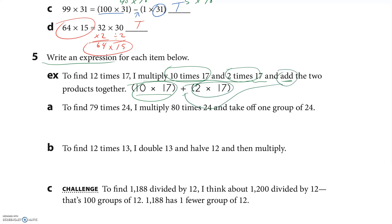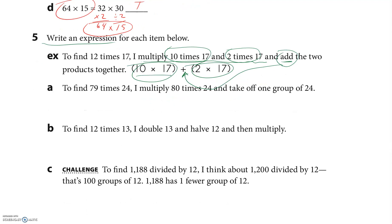Let's try this: find 79 times 24. I multiply 80 times 24, then I take off one group of 24. I believe you write this, it could be others, but if I multiply 80 times 24, there it is. Take off means subtract one group 24. I don't have to put this in parentheses, but I'm going to just kind of separate that.